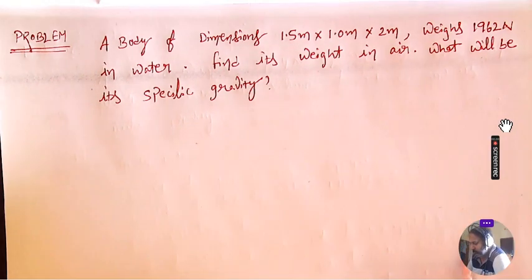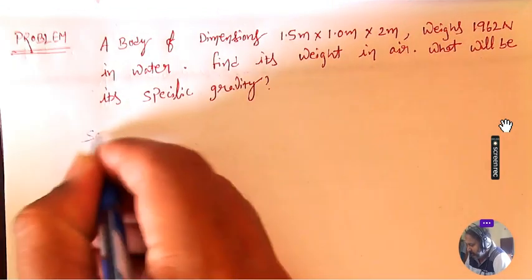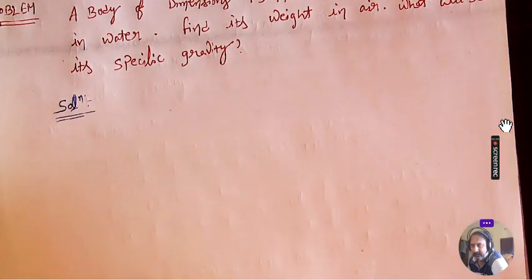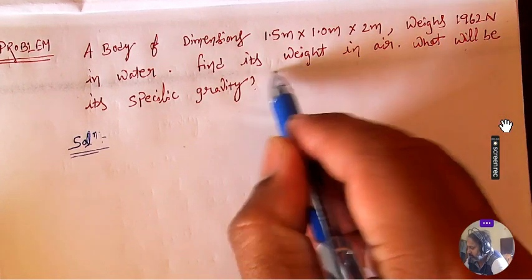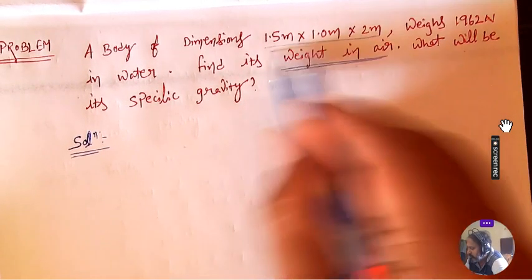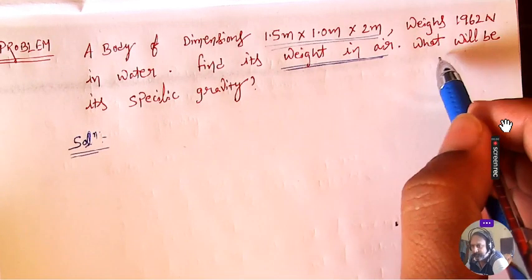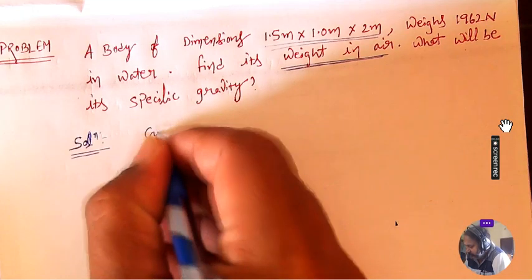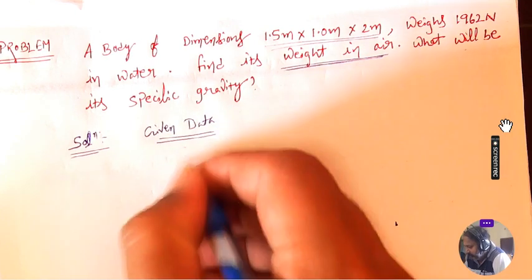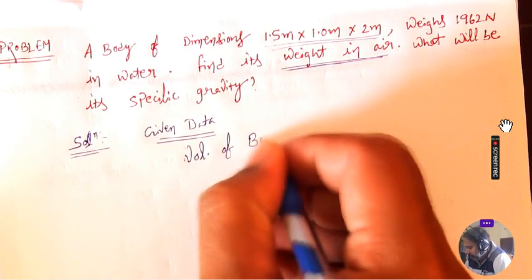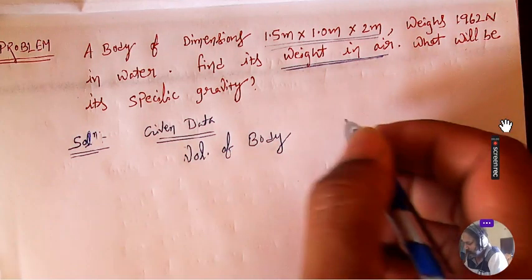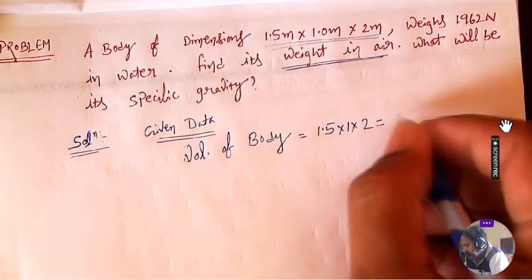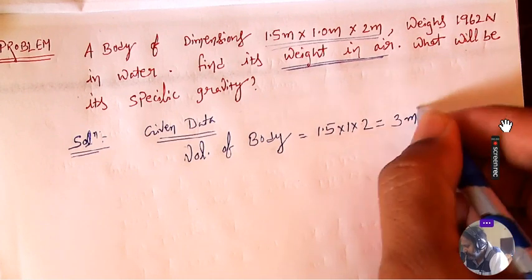Let us solve this problem. What are the dimensions of the body? The things we are going to find as per the problem: we have to find out its weight in air and its specific gravity. The body has dimensions of 1.5 meter × 1 meter × 2 meter. So the volume of the body is 1.5 × 1 × 2 = 3 meter cube.